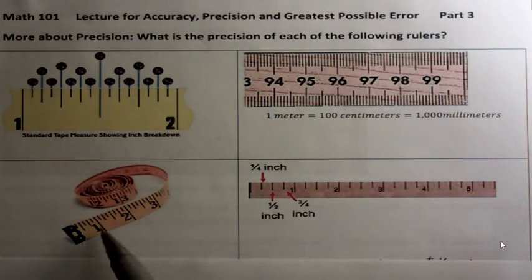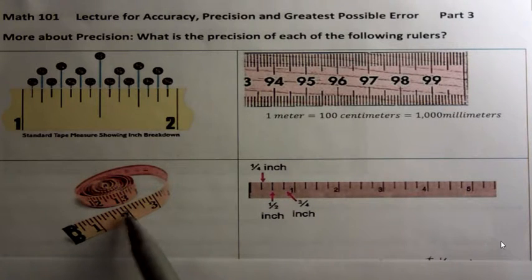What about this one down here? Well, if you count the numbers in between one, two, three, four, five, six, seven, eight, that means that this one is actually to the one eighth of an inch. There's the one eighth is the most precise we could be there.